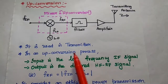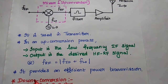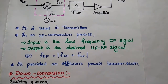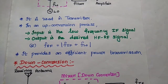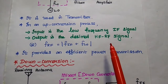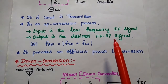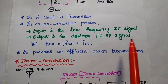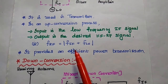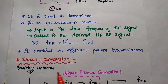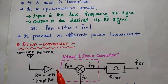Up conversion is very important at the transmitter side. The input is the low-frequency IF signal and the output is the desired high-frequency RF signal. Since we are using a transmitting antenna, we need a high-frequency radio frequency signal. Here we select the sum of the frequencies, which provides efficient power transmission at the transmitter side.